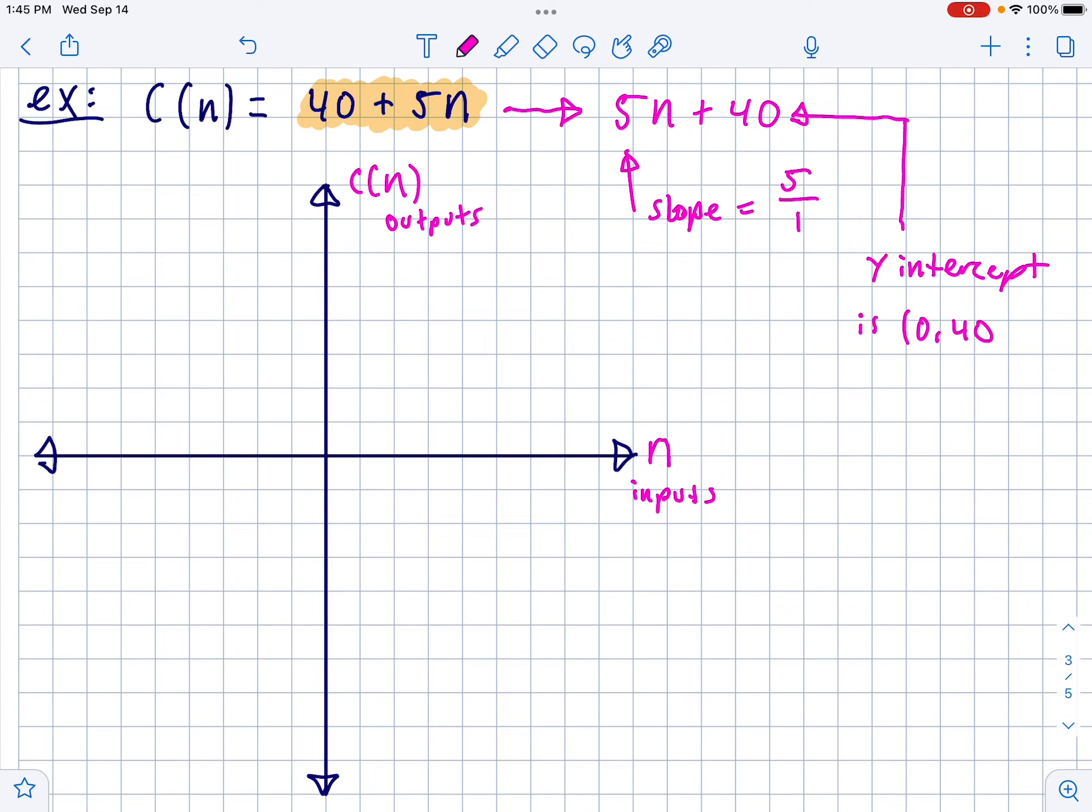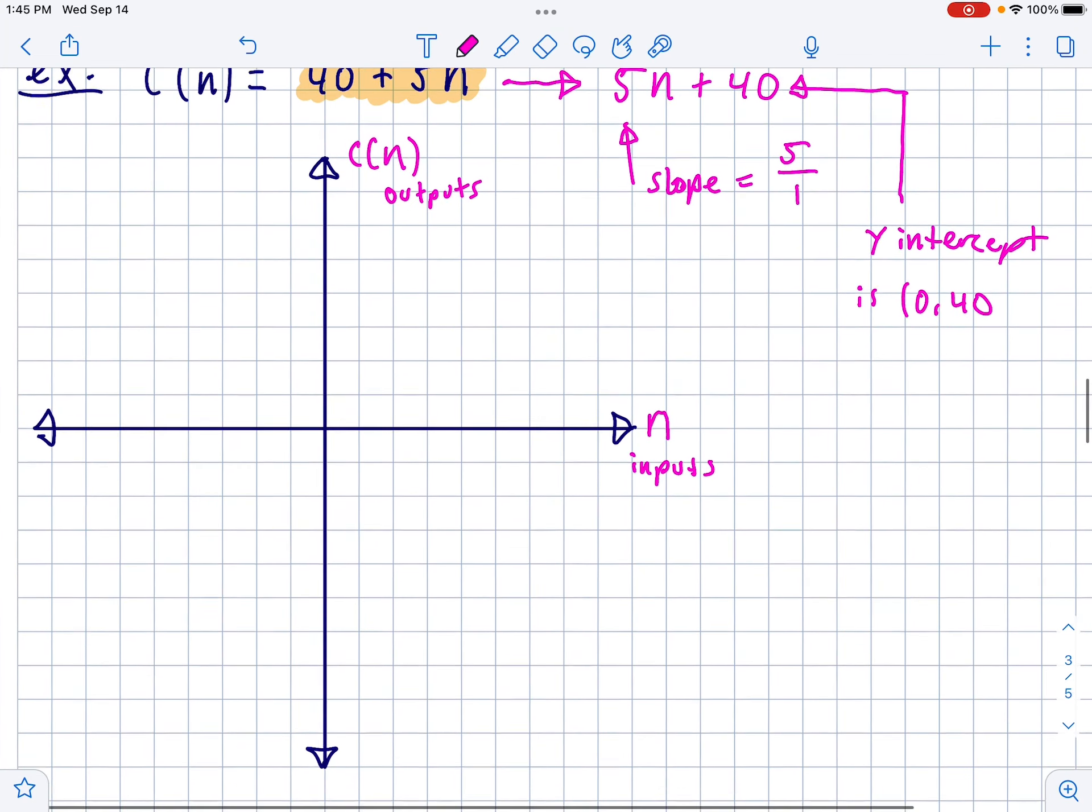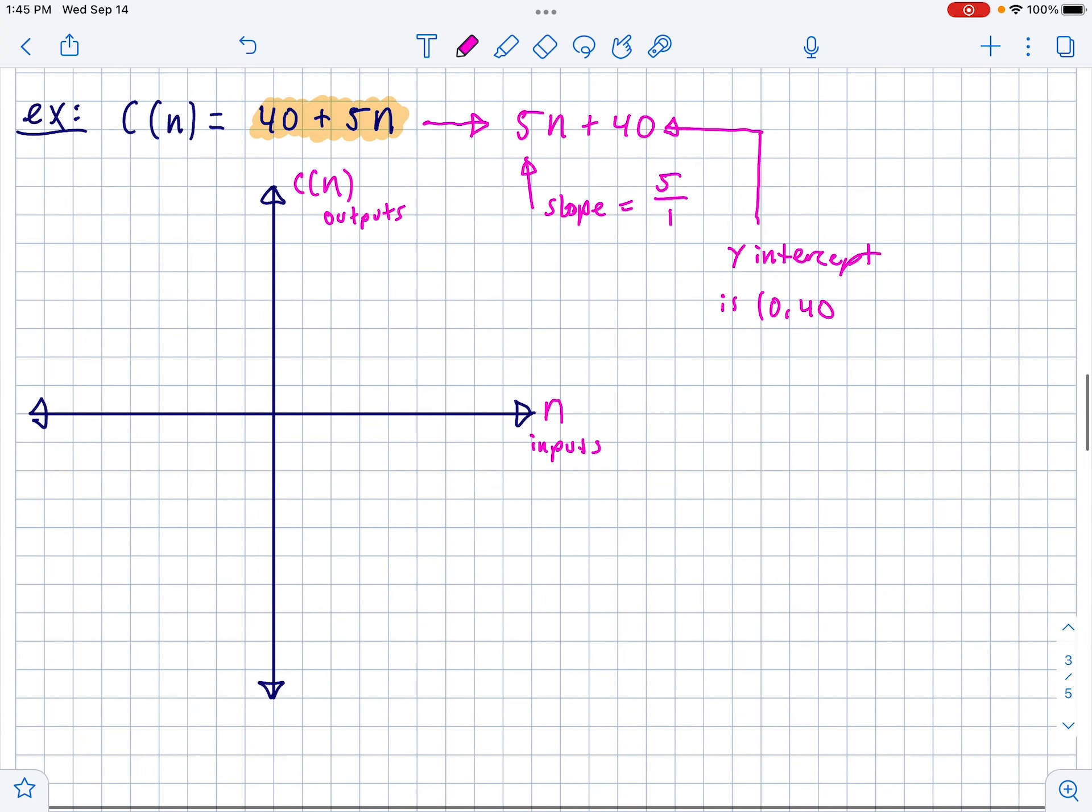Now, in terms of graphing this, yes, I could start at 40 and go up 5 over 1, up 5 over 1. But I feel like it's going to be awkward with the tick marks on this graph about whether they should go up by 5s or 1s or 10s or something like that. So I'm actually going to use a system called graphing by intercepts.